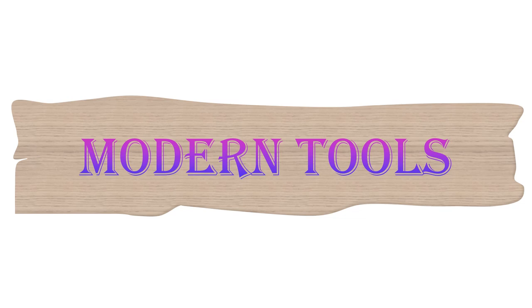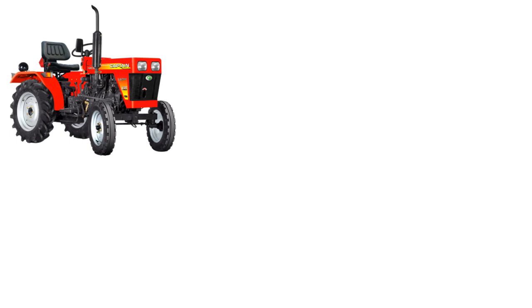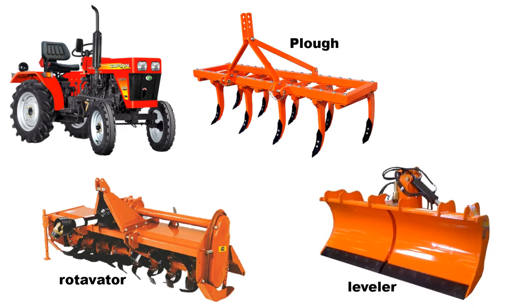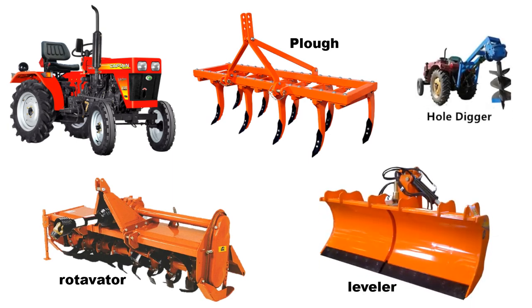Now, let's learn about modern tools. This is a tractor. Generally, farmers nowadays use tractors for plowing. Using a plow, rotavator, and leveler, the field can be worked for various purposes. A cone digger is also used for planting mango trees and similar crops.